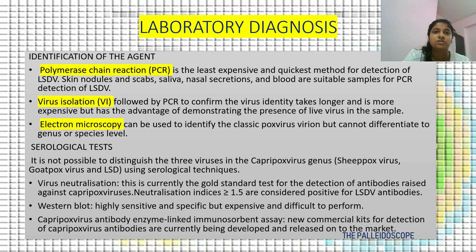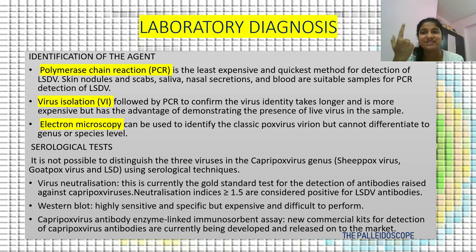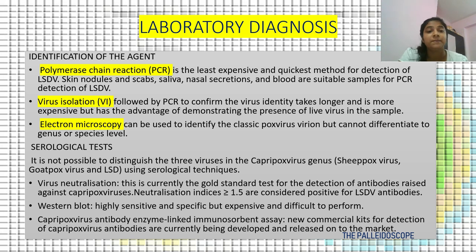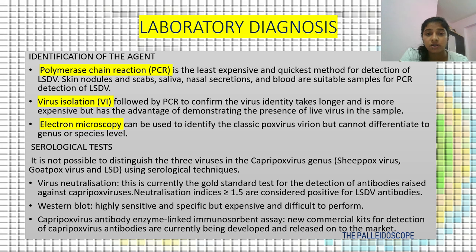Laboratory diagnosis: For confirmatory identification of the agent, three processes are used — polymerase chain reaction (PCR), virus isolation, and electron microscopy. PCR is the least expensive and quickest method for detection of LSD; skin biopsies, stabs, saliva, nasal secretions and blood are suitable samples. Virus isolation followed by PCR to confirm the virus identity takes longer and is more expensive but has the advantage of demonstrating the presence of live virus in the sample. Electron microscopy can identify the classic poxvirus morphology but cannot differentiate genus or species — that can be done with PCR and virus isolation.